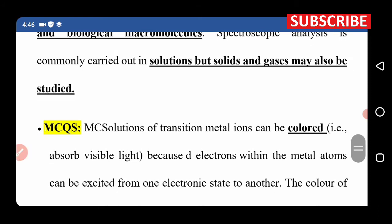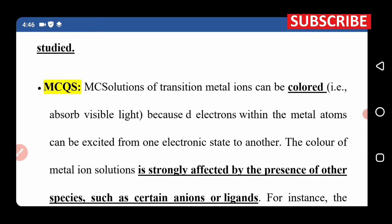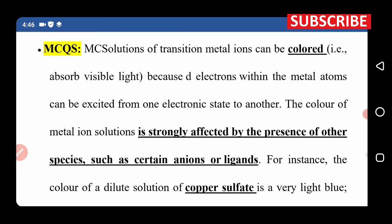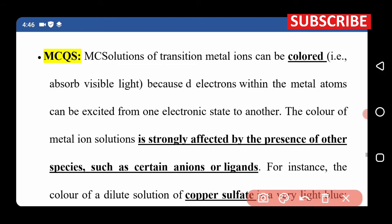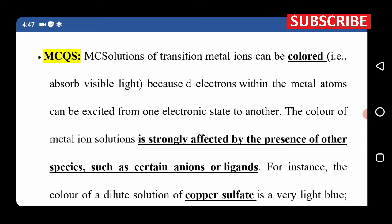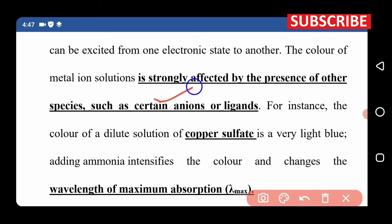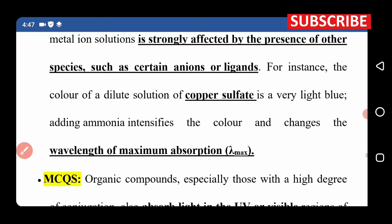Solutions of transition metal ions can be analyzed. Transition metals have colored solutions because electrons in the metal ions can be excited from one d-electron state to another. The d subshell electrons are half-filled and become excited, producing color. The color is strongly affected by the presence of other species — for example, a dilute solution of copper sulfate is very light blue.